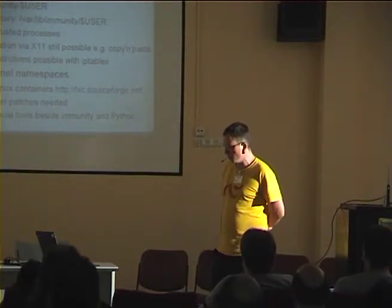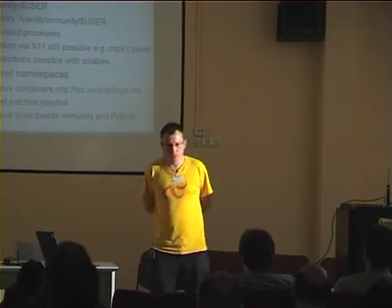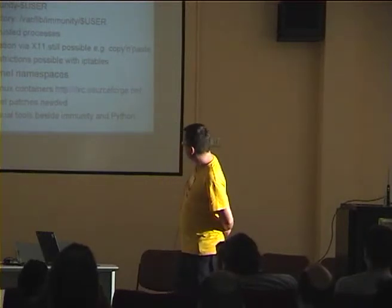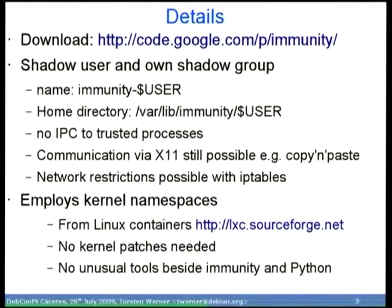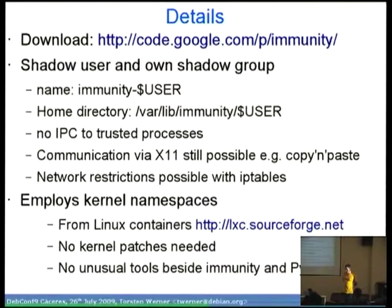How does it work? It employs a kernel namespaces feature from the Linux containers project, available from SourceForge. It does not need any kernel patches — at least with the Lenny kernel it's not necessary anymore. Thanks to the kernel team, the necessary configuration options are set in Debian, so you can use it directly without a different kernel. You don't need any unusual tools except for the immunity tool itself and Python.